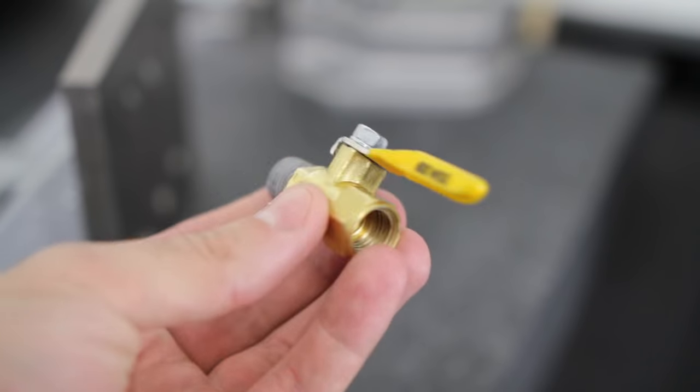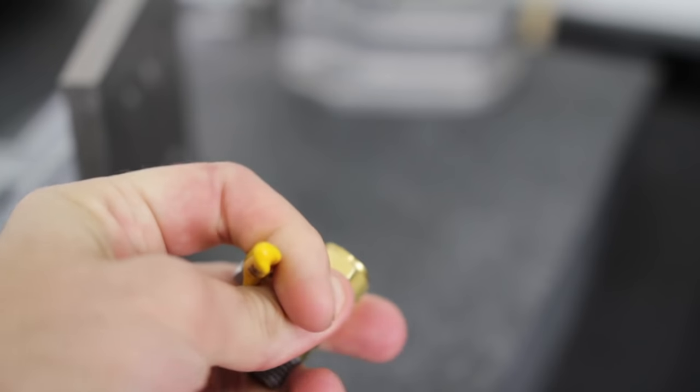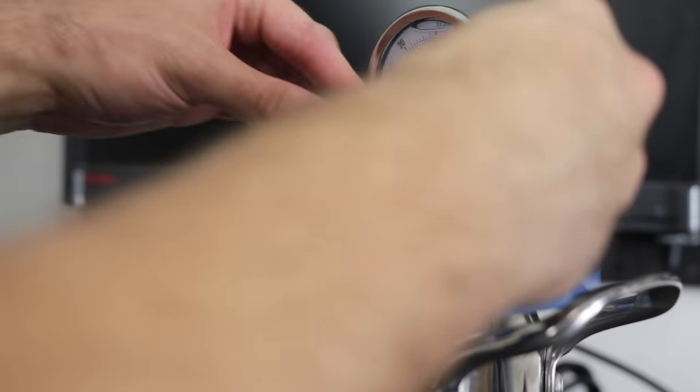This is the ¼-inch NPT ball valve. I attach both ¼-inch NPT ball valves to the T-fitting and tighten.